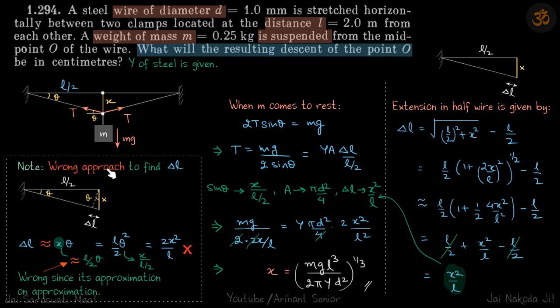Now one wrong approach which many students do. Up to here they are fine, but then delta L they try to get by a different way. What they do is draw a perpendicular from here. They write delta L as X sin theta, which sounds reasonable, and then X as L by 2 sin theta or L by 2 theta because tan theta is same as theta.